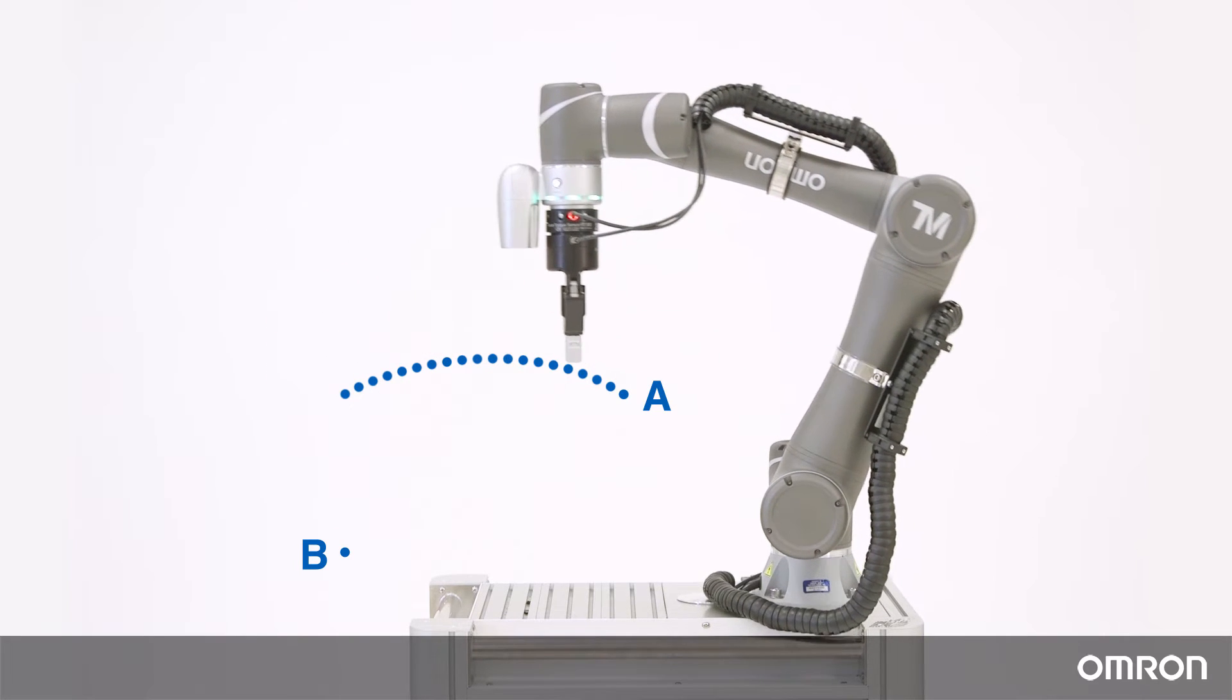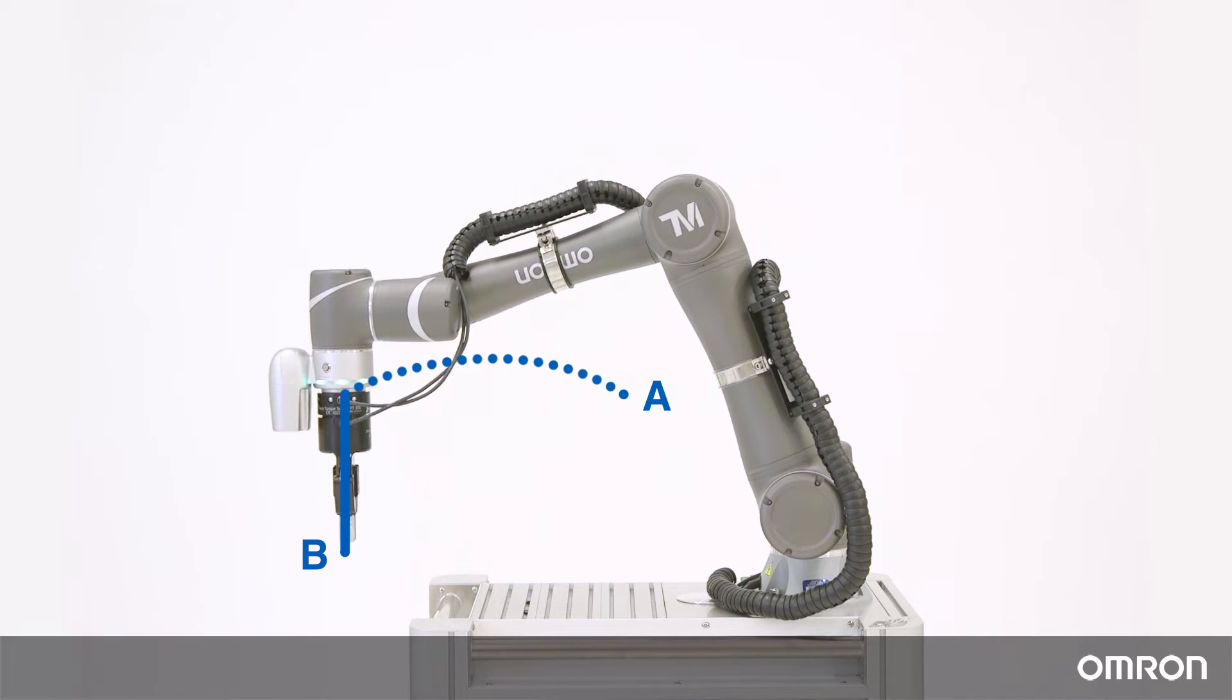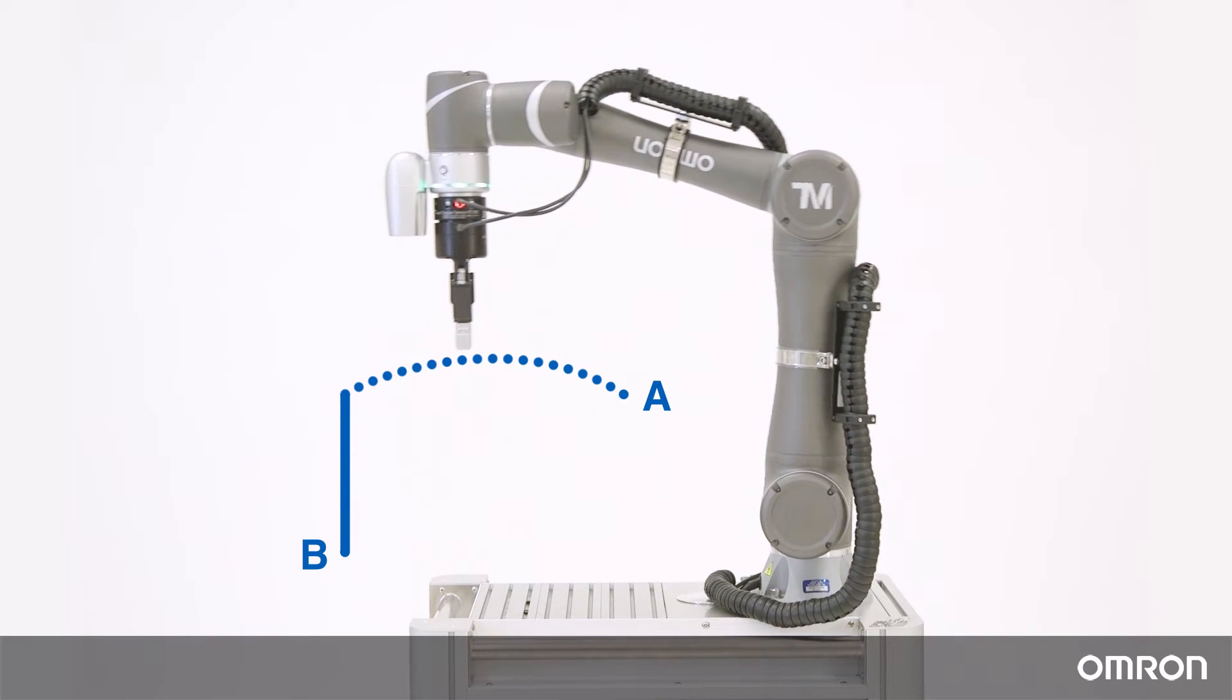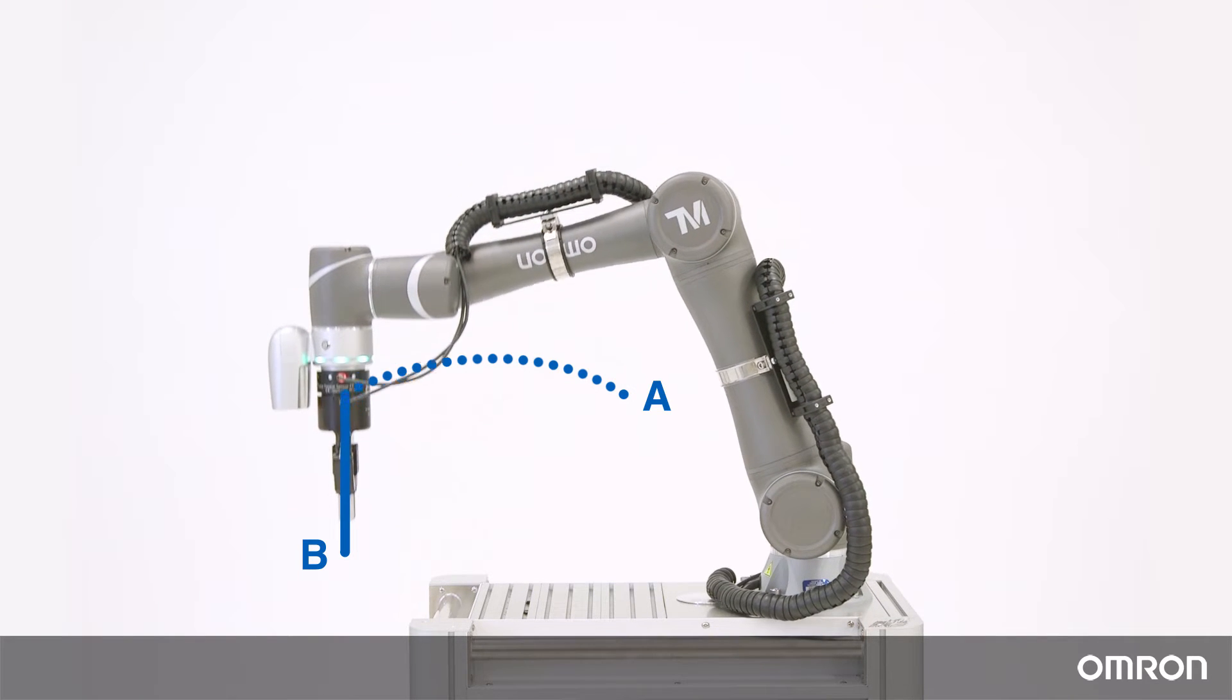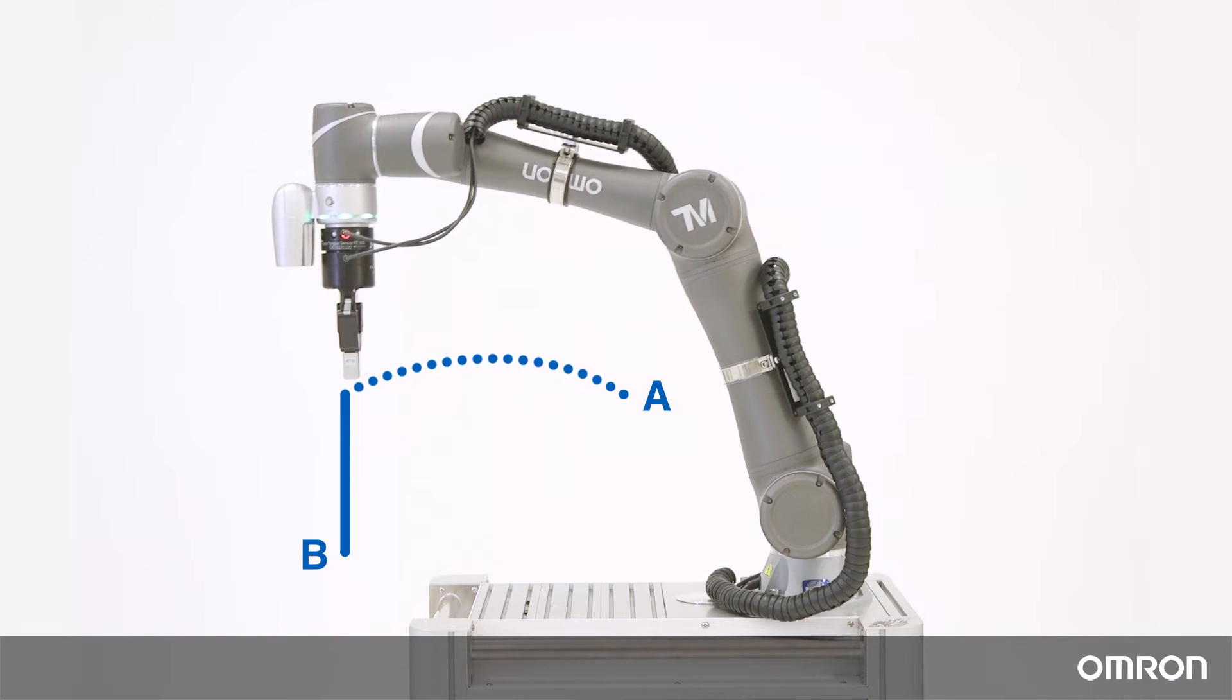The second step uses line motion to move the end effector down to point B. This motion occurs in the Z-axis only. The approach height can be adjusted as a percentage of the total Z-axis travel.